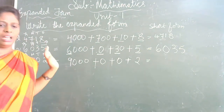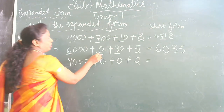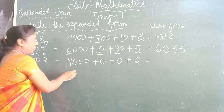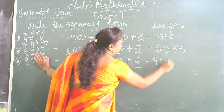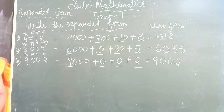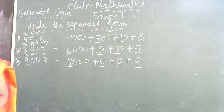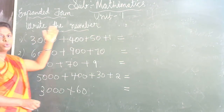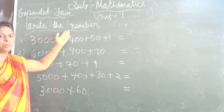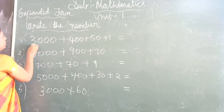Again, I repeat. Children, see here. Take all the first digits. This is the first digit — you have to write 0. For example, 9, 0, 0, 2 — the short form is 9002. When converting from expanded form to short form, take all the first numbers of each term and write them together.